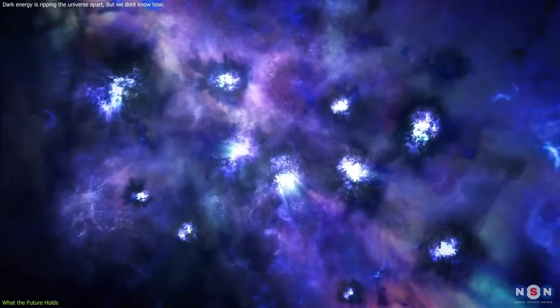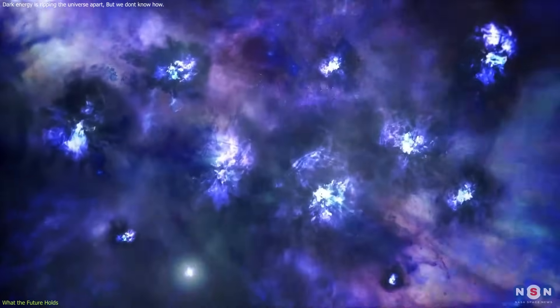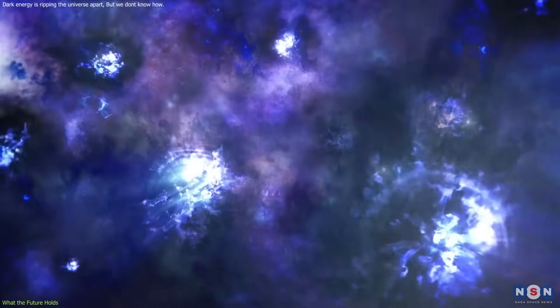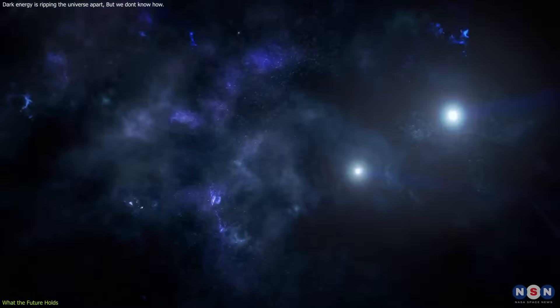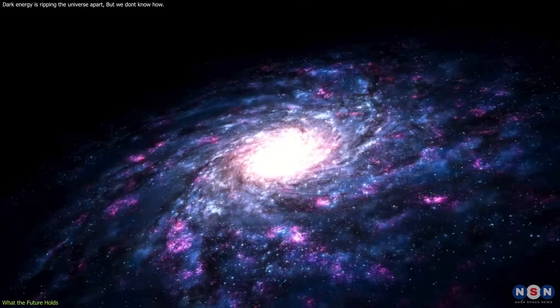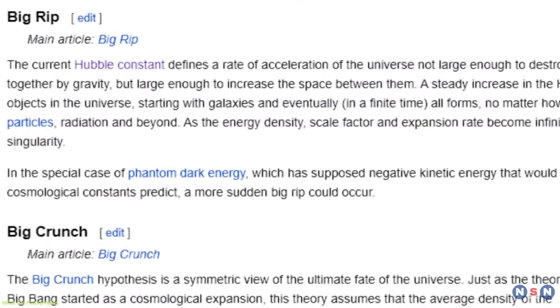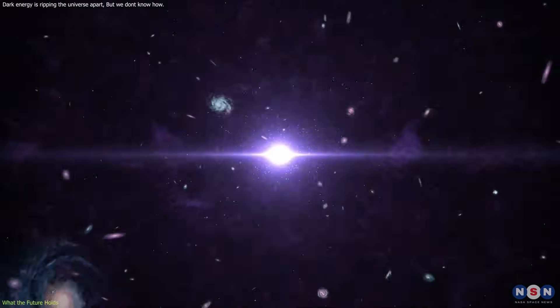For example, if dark energy becomes stronger over time, it can overcome the gravity of matter and radiation and rip apart the universe at all scales, from galaxies to atoms. This is known as the Big Rip Scenario, where the universe will end in a singularity of infinite density and zero size.